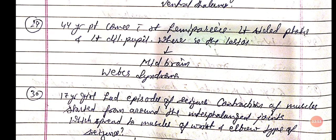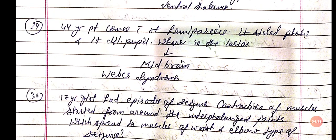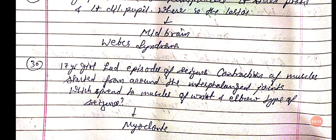A 17-year-old girl had episodes of seizures with contraction of muscles, starting from around the interphalangeal joints and spreading to the wrist and elbow. The type of seizure is myoclonic seizures.